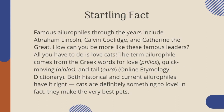Here is another way to start this introduction — with a startling fact: 'Famous ailurophiles through the years include Abraham Lincoln, Calvin Coolidge, and Catherine the Great. How can you be more like these famous leaders? All you have to do is love cats. The term ailurophile comes from the Greek words for love (philos), quick moving (aeolos), and tail (aura).' I went into my research, found information about this word and where it came from, and in doing so I probably told most readers something they didn't already know — grabbing their attention and leading into my argument that cats make the best pets.